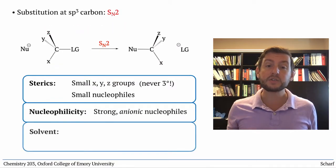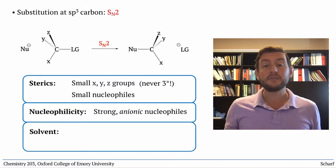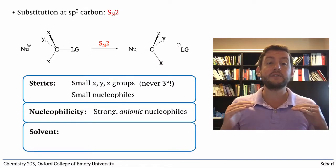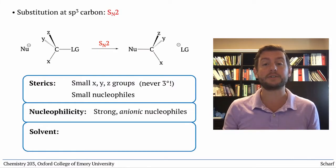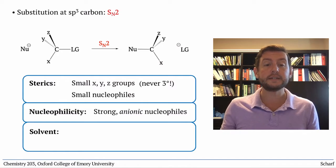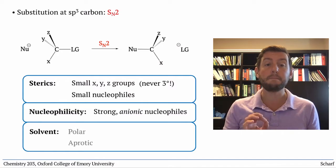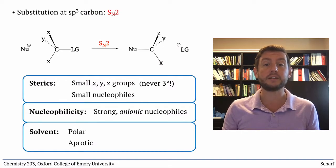Finally, solvent. Any solvents that reduce the energy of the nucleophile, perhaps by strongly solvating it, hinder the reaction. Usually the SN2 reaction works best in polar aprotic solvents.